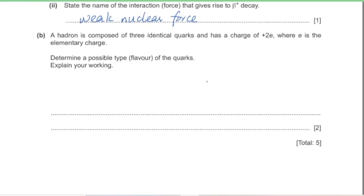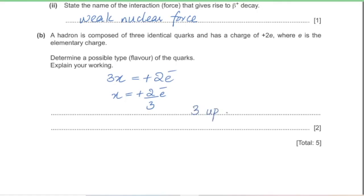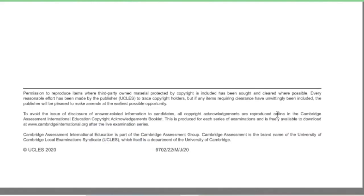Part B: a hadron is composed of three identical quarks and has a charge of +2e. Determine a possible quark type. If each quark has charge x and the total is +2e, then 3x = +2e, so x = +2/3 e. This is the up quark. Therefore the hadron is made of three up quarks.